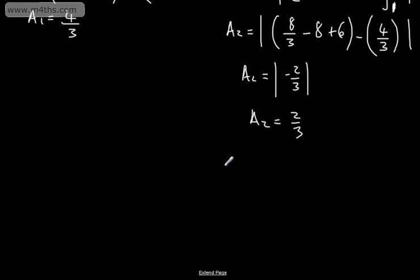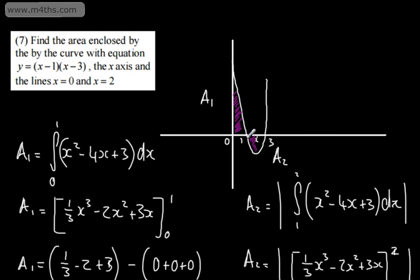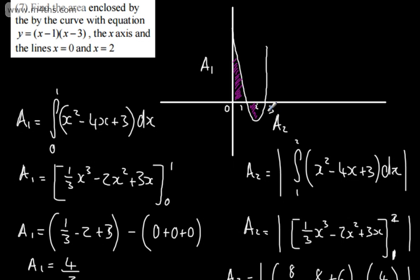Therefore A1 + A2 = 4/3 + 2/3 = 6/3 = 2. You can write that as 2 square units. That gives us exactly what we want — the area enclosed by the curve and the x-axis between x = 0 and x = 2 by splitting it up. Find the points where it crosses the x-axis, split the integral, find the absolute value of the negative area, and add it to the positive area.